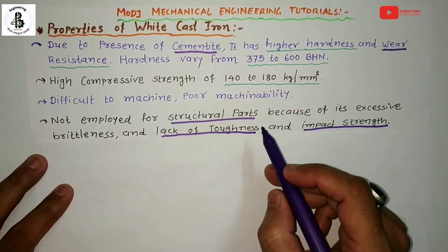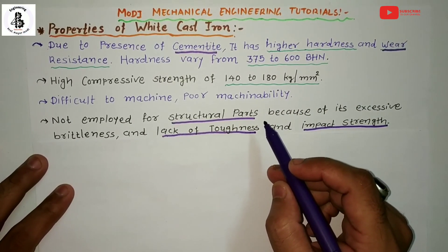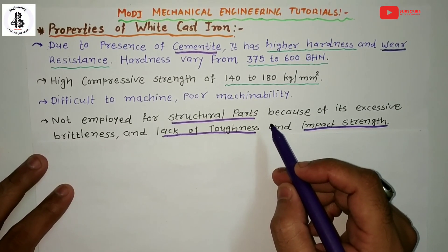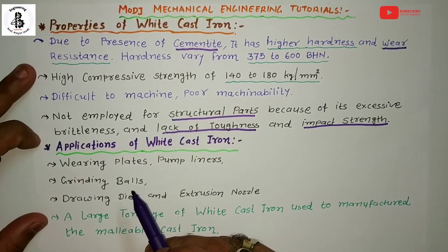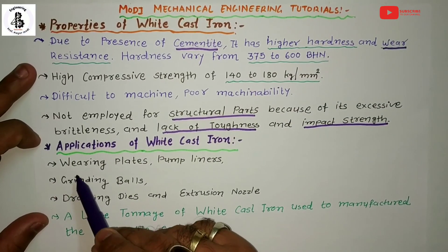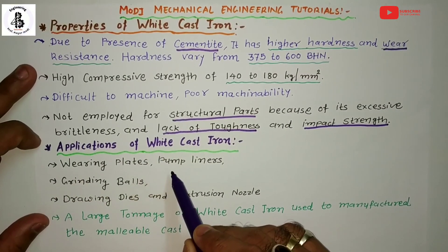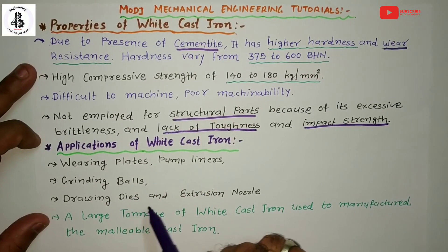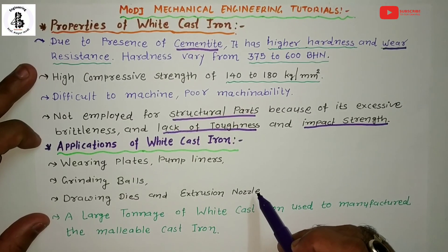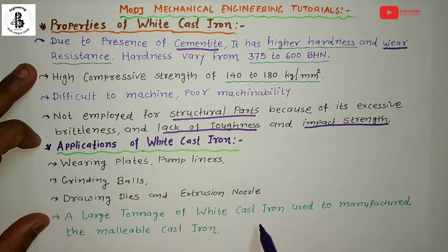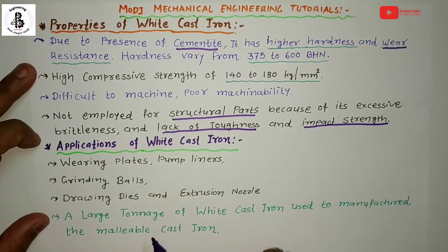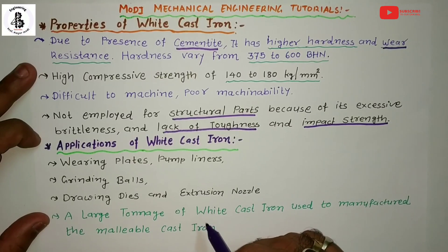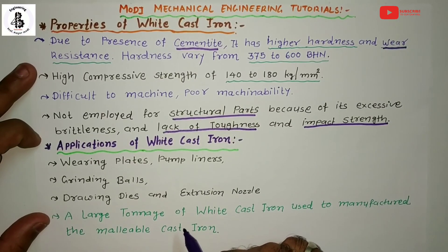Based on these properties of white cast irons, it has many applications. White cast irons are generally employed for wearing plates, pump liners, grinding balls, drawing dies, and extrusion nozzles. Also, a large tonnage of white cast iron is used to manufacture malleable cast irons — some changes or processes are carried out on the white cast iron to produce malleable cast iron.